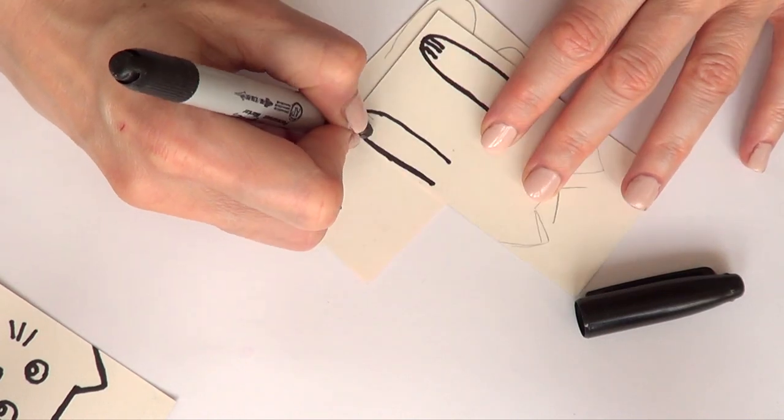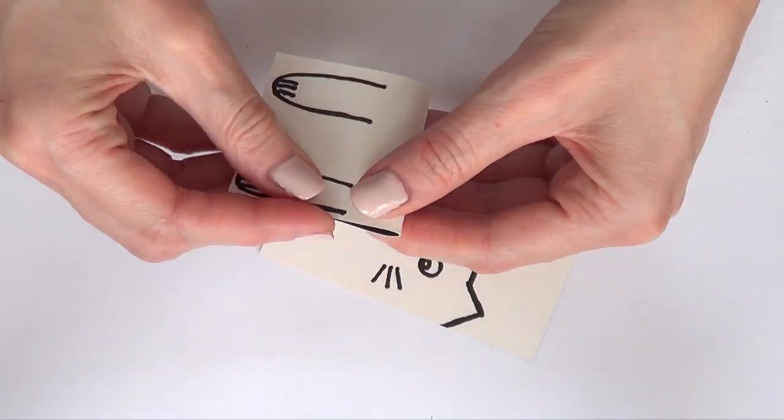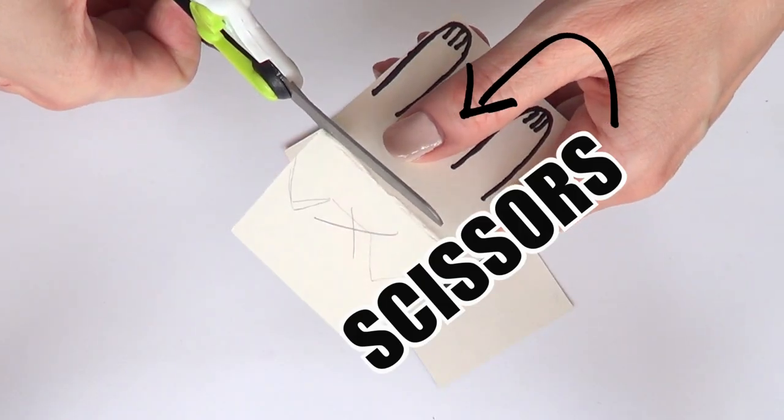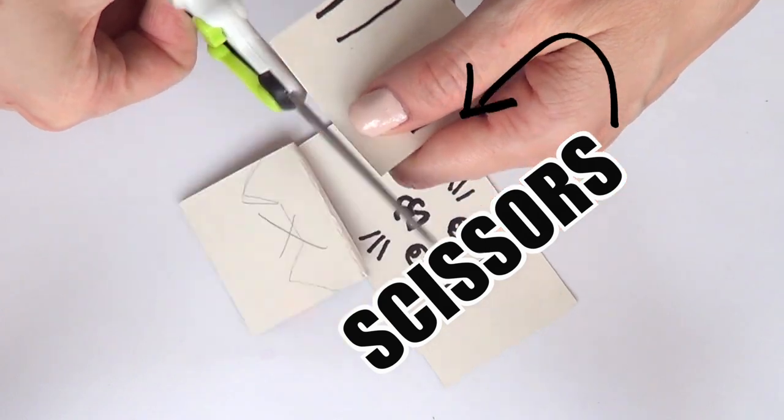Then I'm going to take my scissors and I'm just going to cut the part of my kitty's body.